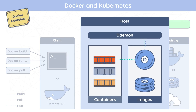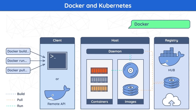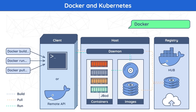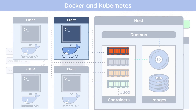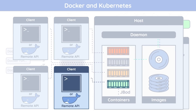A container is a runnable instance of an image. You can create, start, stop, move, or delete a Docker container using the Docker API or CLI. You can connect it to one or more networks, attach storage to it, or even create a new image based on its current state. As a standard, containers are relatively well isolated from other containers and their host. Users have the ability to control how isolated a container's network, storage, or other underlying subsystems are from other containers or the host machine.